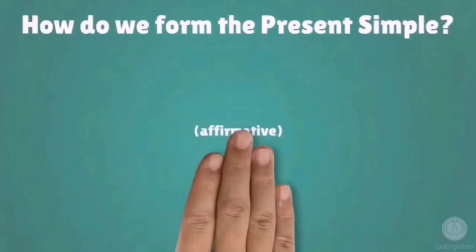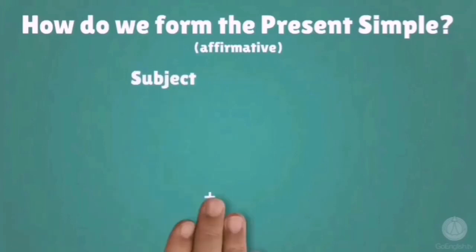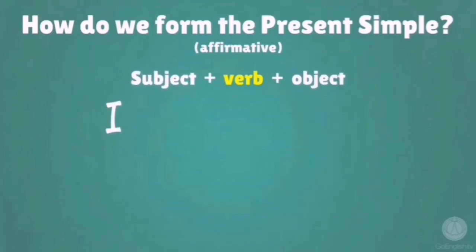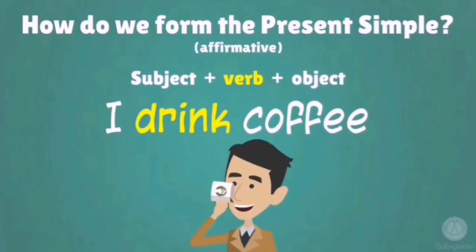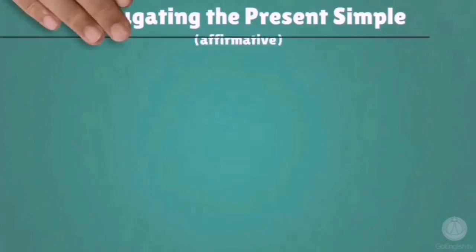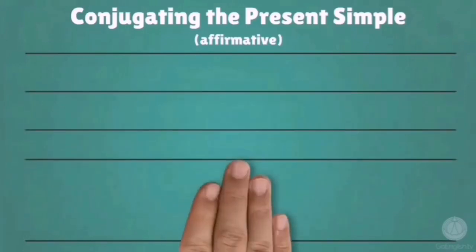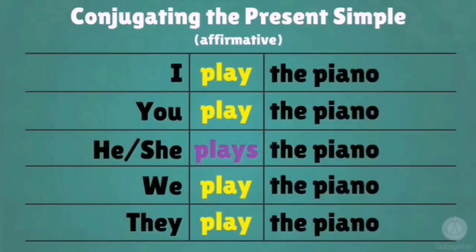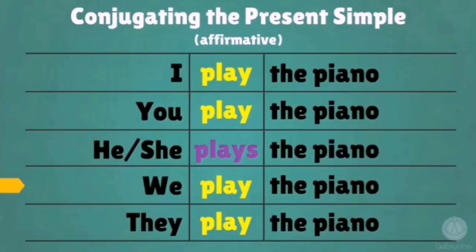How do we form the present simple — affirmative? Subject + verb + object. For example: 'I drink coffee.' Conjugating: I play the piano. You play the piano. He plays the piano. She plays the piano. We play the piano. They play the piano.